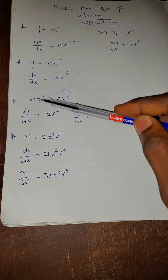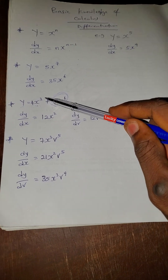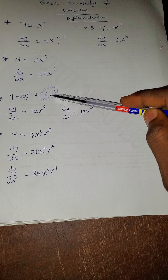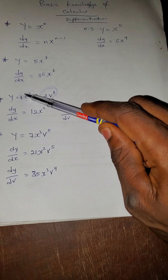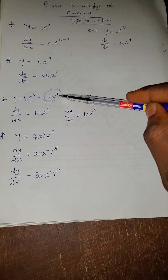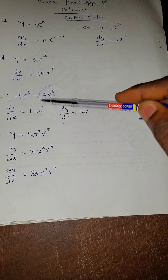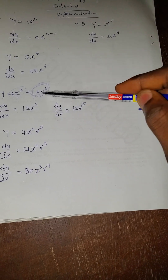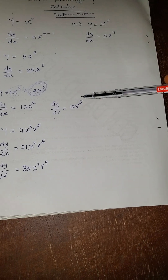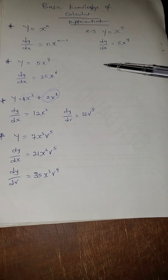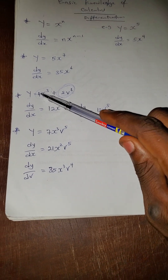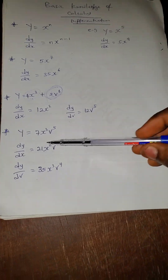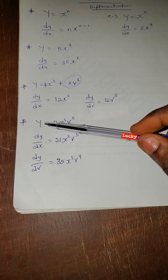For dy/dx: three times four is twelve, so dy/dx = 12x². Now if they ask for dy/dv, then nothing concerns the x — we target the v term. Six times two is twelve, so dy/dv = 12v⁵. That is when both terms have a plus or minus sign between them.